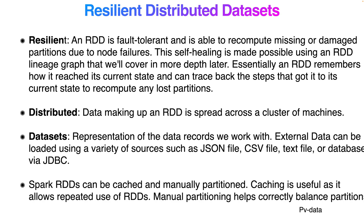'Distributed' is the fundamental property of big data — RDD data is spread across various cluster commodity hardware. 'Dataset' represents the data records. RDDs can work with external data loaded from a variety of sources such as JSON files, CSV files, text files, database files, and JDBC connections.